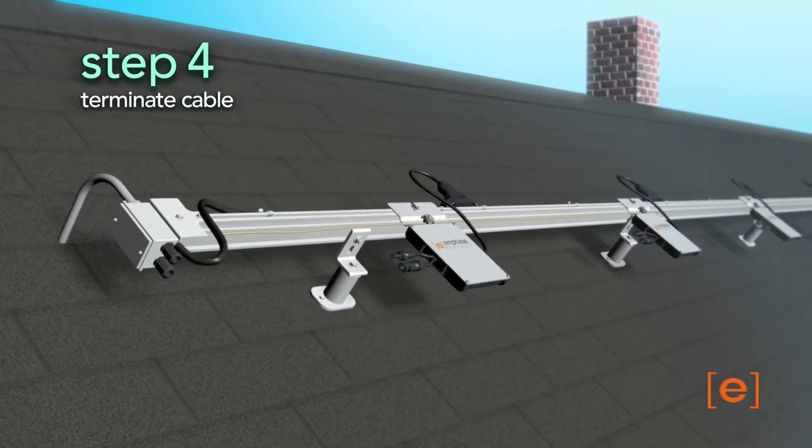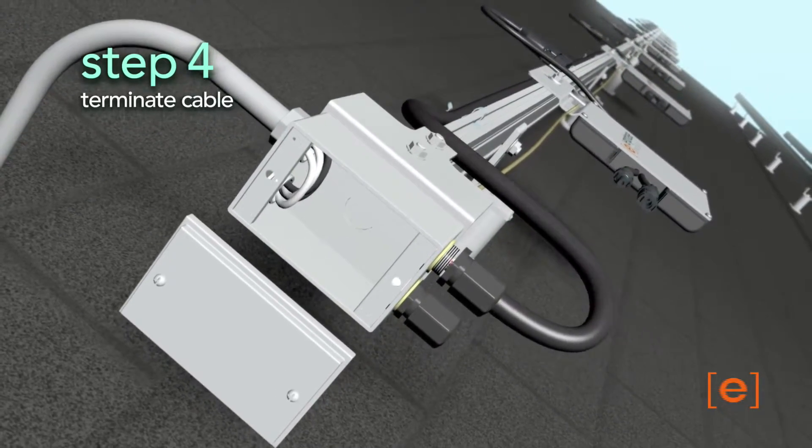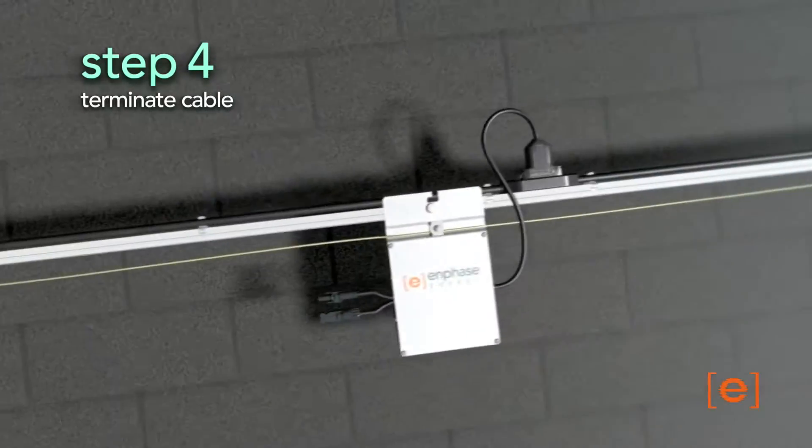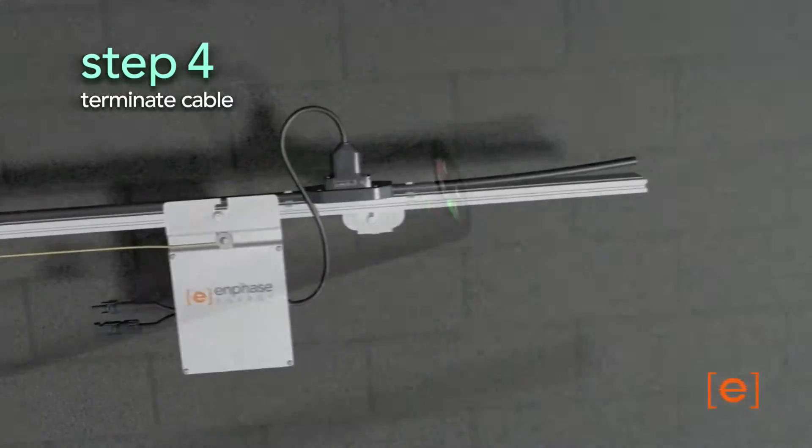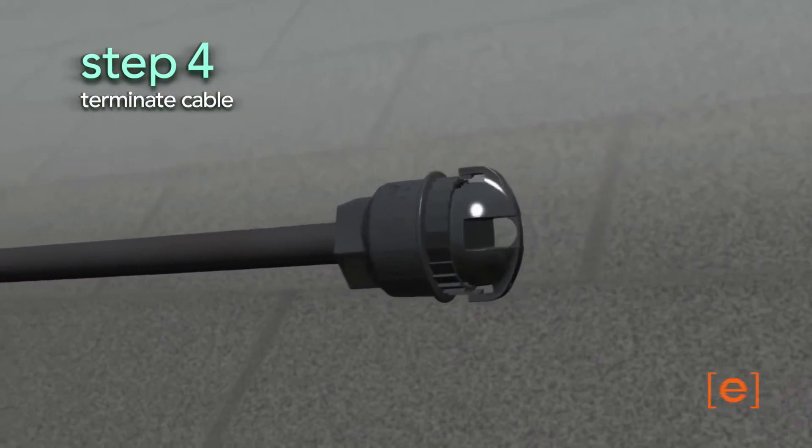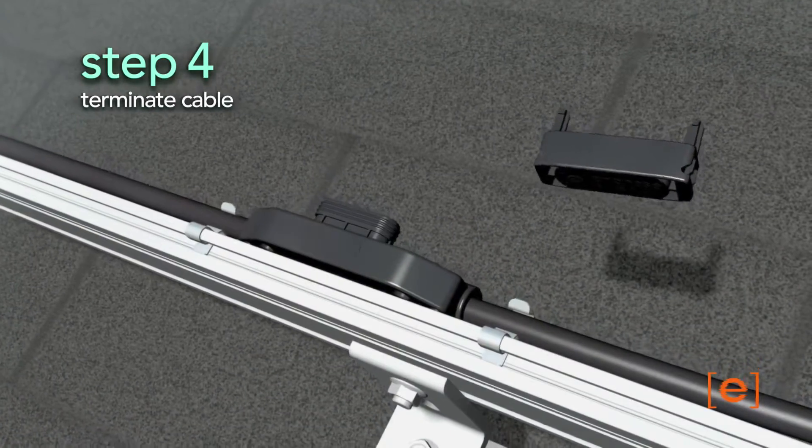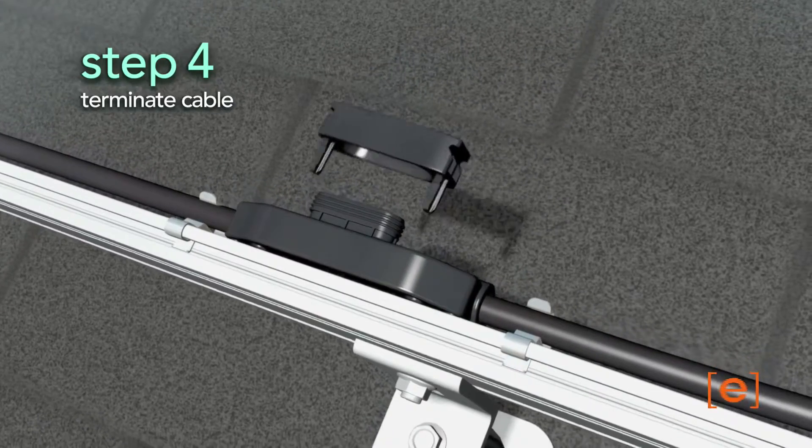Connect one end of the trunk cable to the junction box. The other end of the trunk cable must be terminated using a termination cap. Unused connectors must be covered using the caps provided.